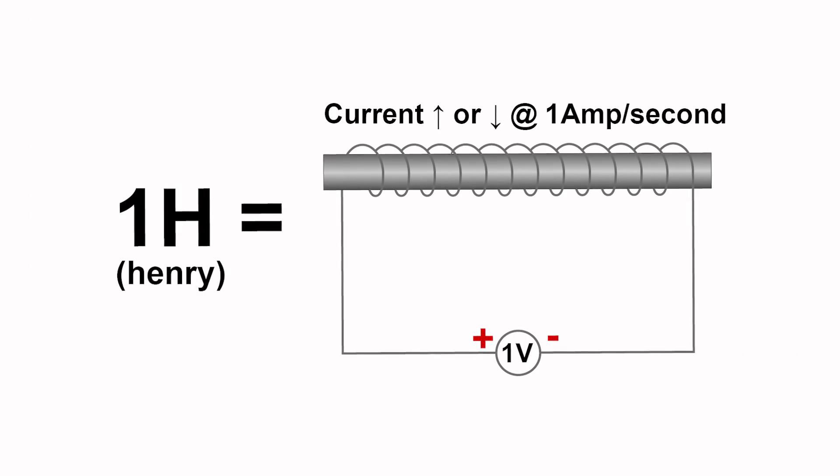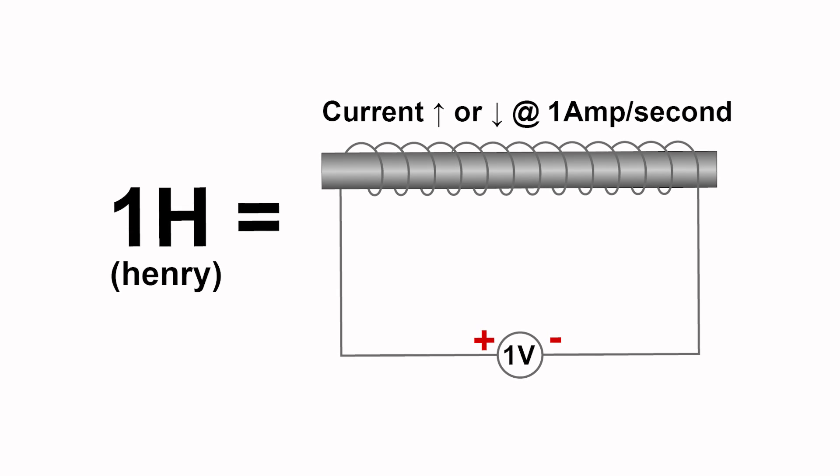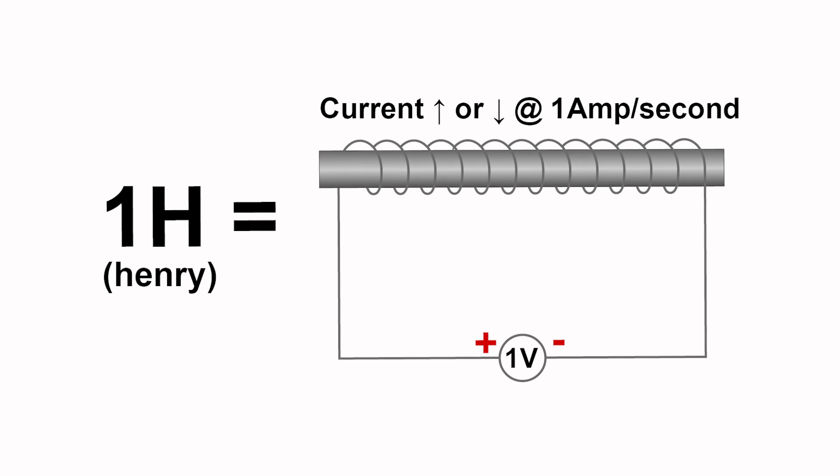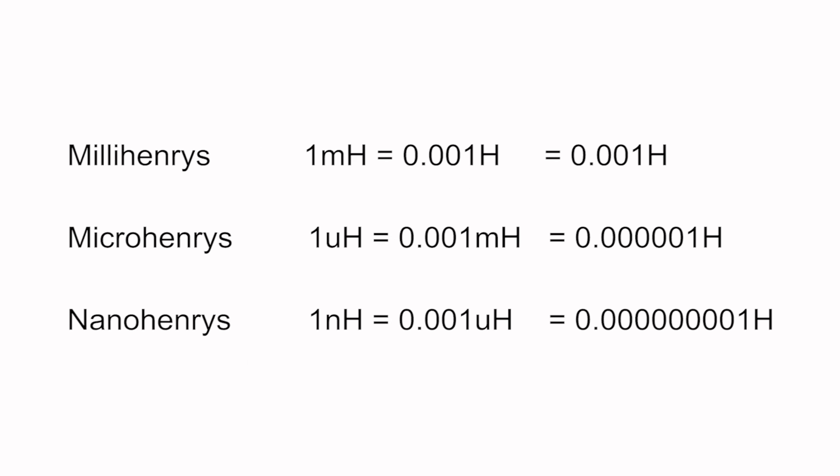Inductance is measured in henries. An inductance of one henry represents a potential difference of one volt across an inductor, within which the current increases or decreases at the rate of one amp per second. Like with farads, the measurement of capacitance, one henry is quite large. Instead, inductance is usually measured in millihenries, microhenries, or nanohenries.